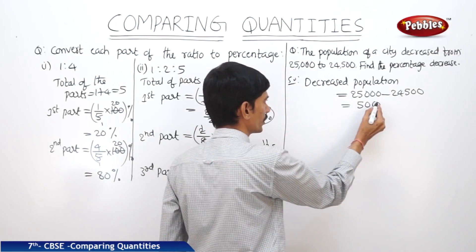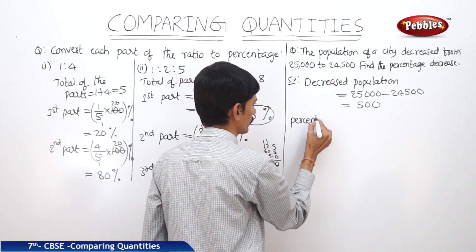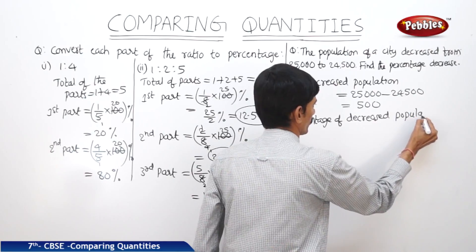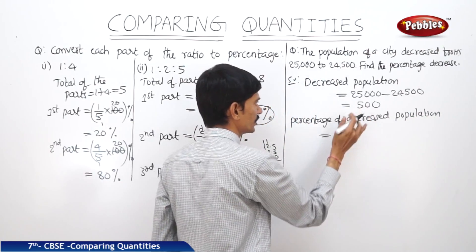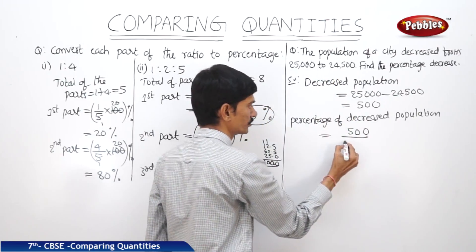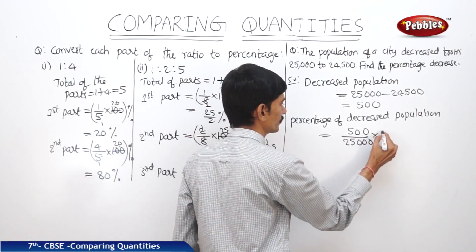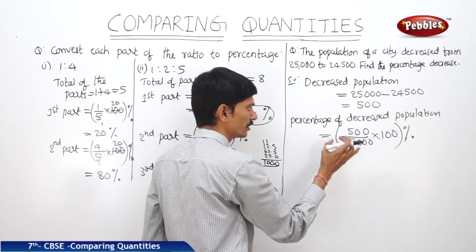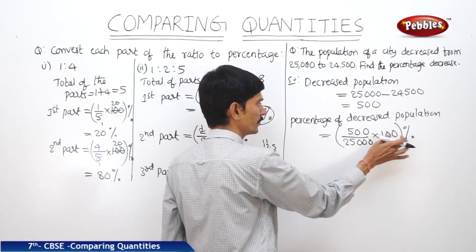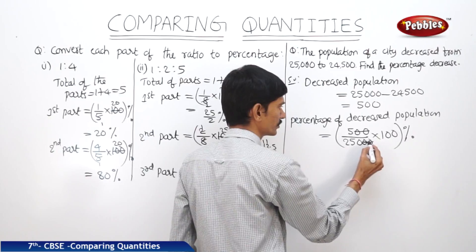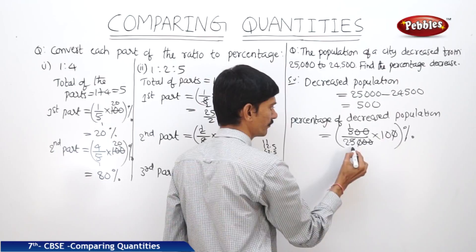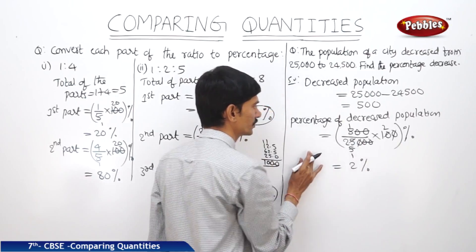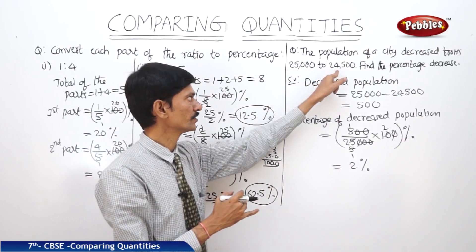Now the percentage of decreased population equals the decreased population, which is 500, by the original population, that is 25,000, into 100%. Cancelling two zeros, we get 5 by 25 into 10, which simplifies to 2%. So 2% of the population was decreased when it decreased from 25,000 to 24,500.